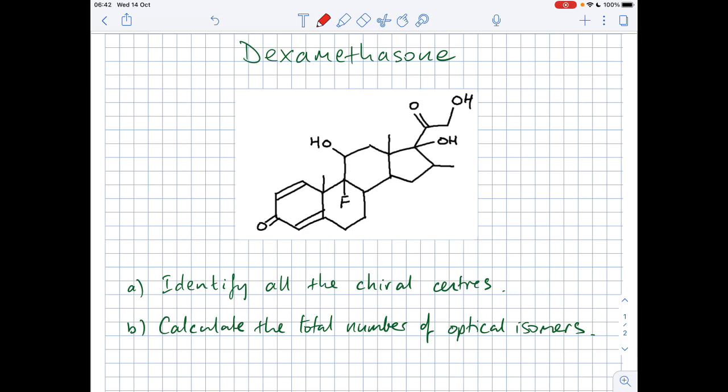If you want to have a go at that, identify the chiral centres and then calculate the total number of optical isomers. And then when you're ready, I'll go through the answers.